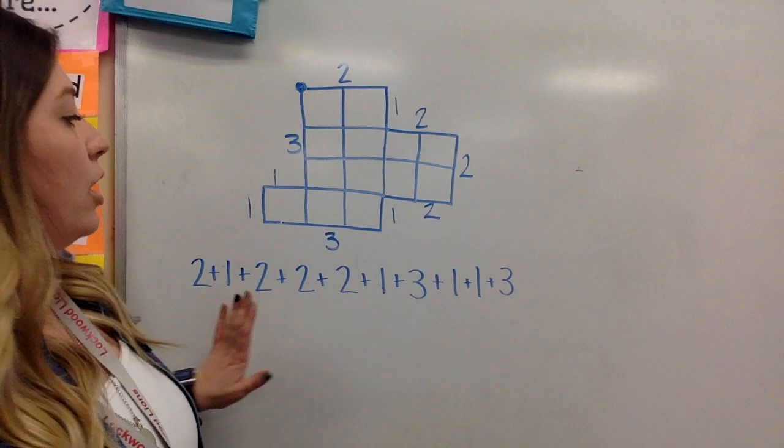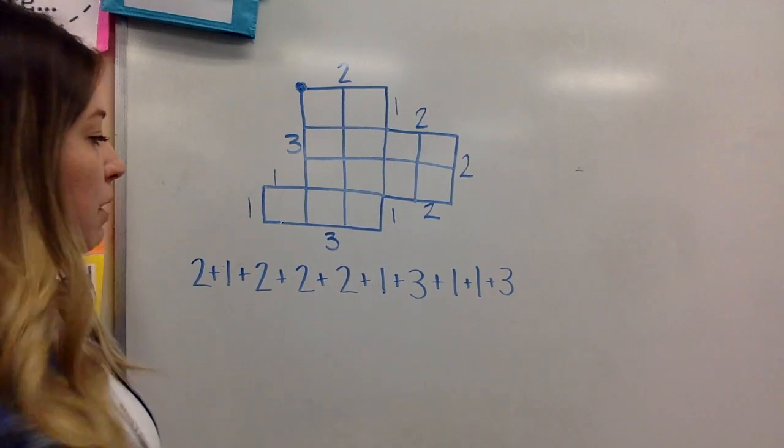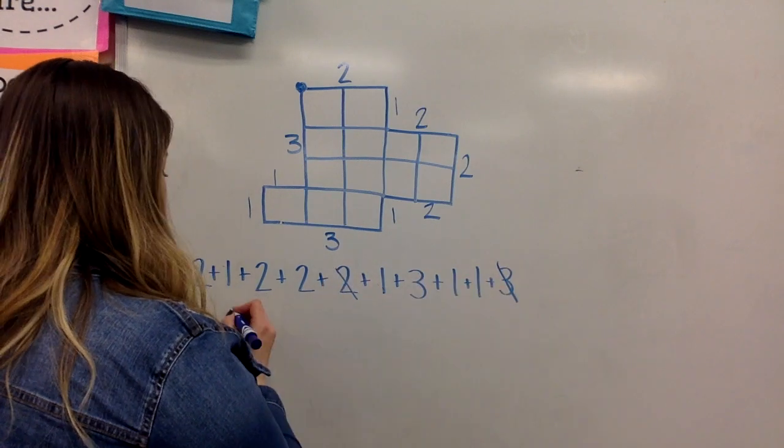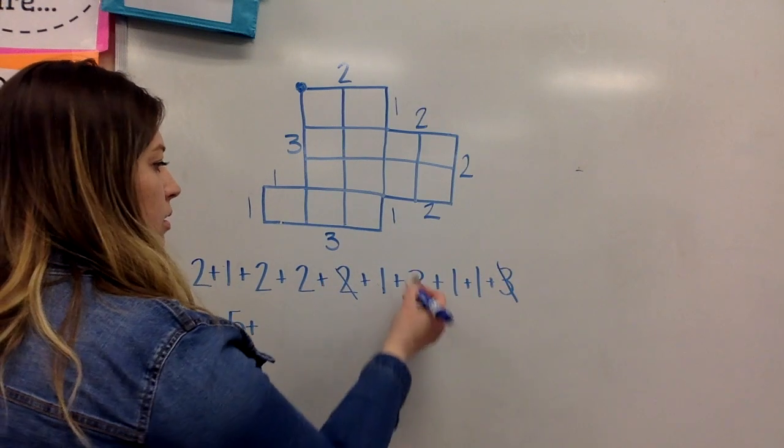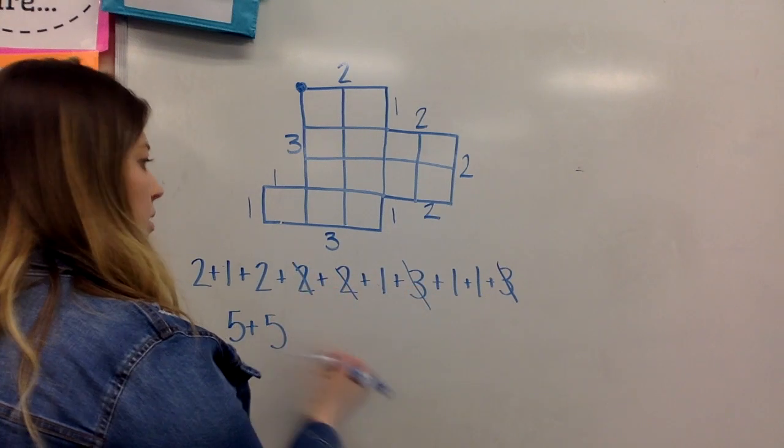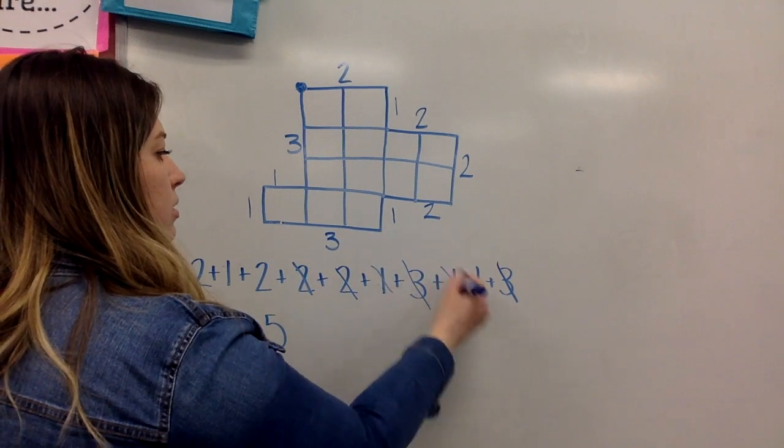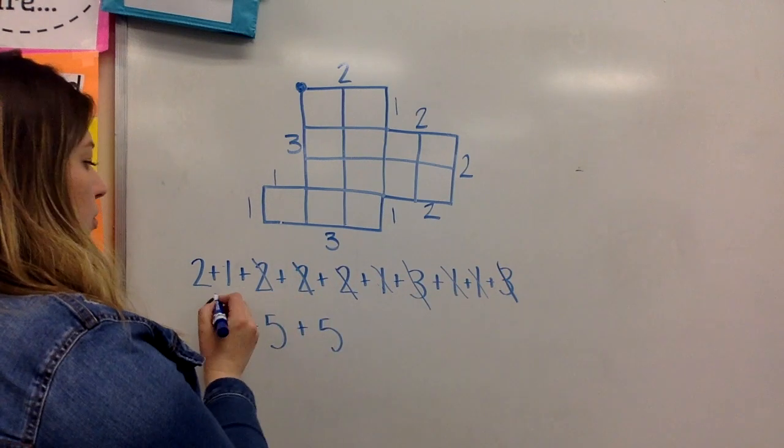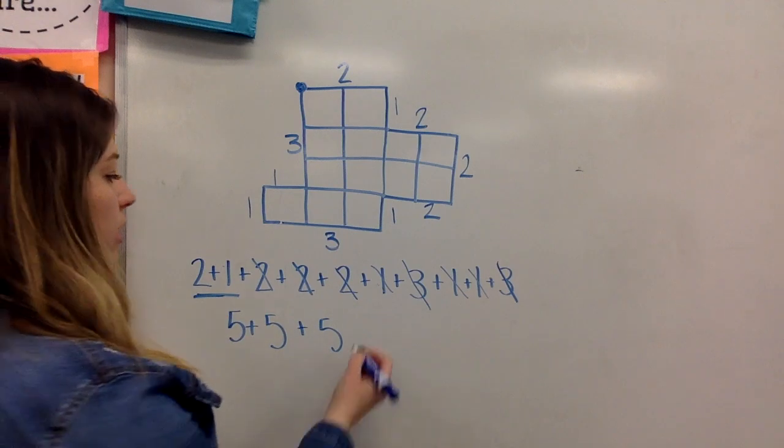So I've just made sure I write everything out, and then I look for my friendly numbers. So right here, I have three and a two, three and a two, and I have one, two, three ones, and a two. And as I look through, I have these ones left over here, and that would be three.